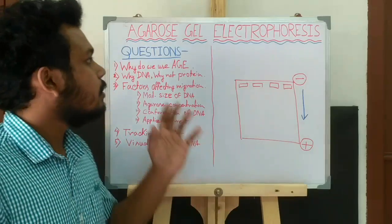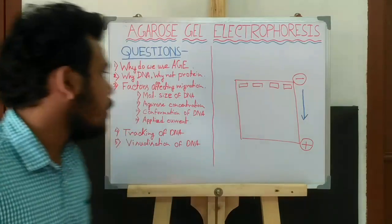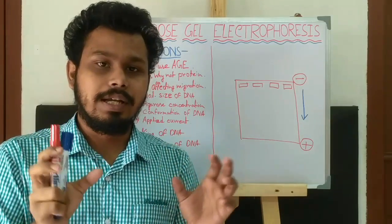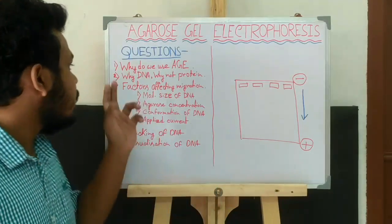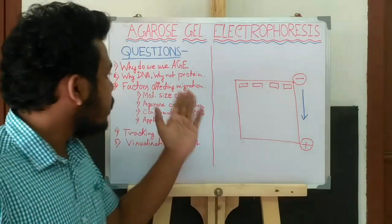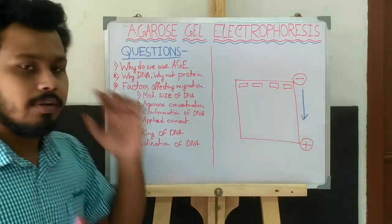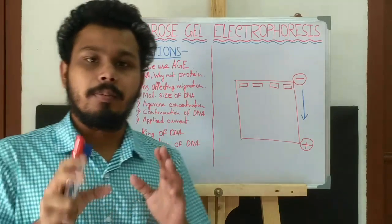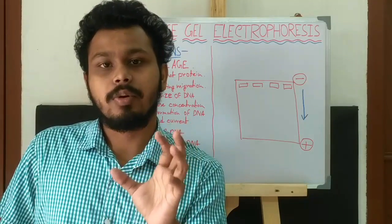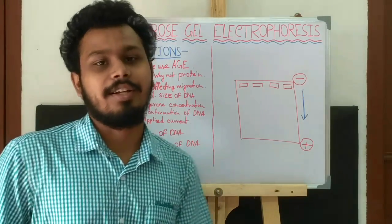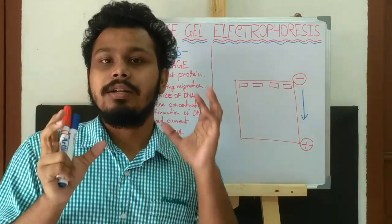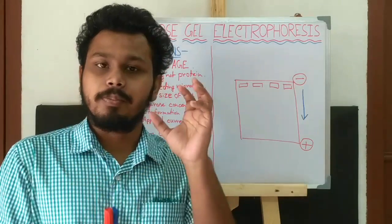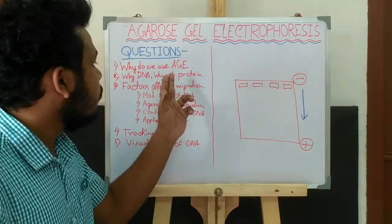Now, why DNA and not proteins? Agarose gel electrophoresis is used to separate DNA but not proteins because DNA molecules are much larger than proteins, and the porosity of agarose gel is very large compared to what is needed for proteins. However, large molecular weight proteins can be separated by agarose gel electrophoresis. Mainly, proteins are separated by SDS-PAGE, in which polyacrylamide gel is used, whose porosity is compatible with proteins.